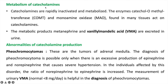Catecholamines are rapidly inactivated and metabolized. Enzymes catechol-O-methyltransferase (COMT) and monoamine oxidase (MAO), found in many tissues, act on catecholamines to inactivate and metabolize them. The metabolic products of catecholamines are metanephrine and vanillylmandelic acid (VMA), which are excreted in urine.